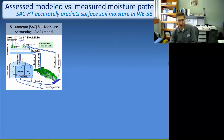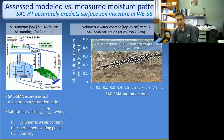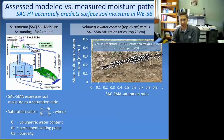We've also looked at soil moisture patterns because soil moisture is a really important variable that affects runoff generation. The Sacramento model expresses soil moisture as a saturation ratio, which is a function of volumetric water content, permanent wilting point, and porosity. When we compare the saturation ratio the model produces against the volumetric water content measured with soil moisture sensors in the field, fixating on the top 25 centimeters, the model does a pretty good job of capturing these surface saturation levels, which gives us confidence the model can forecast soil moisture into the future.